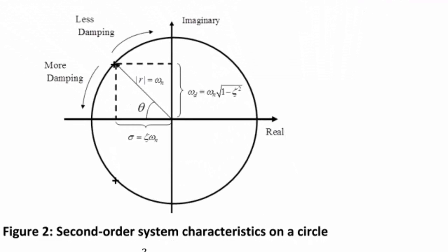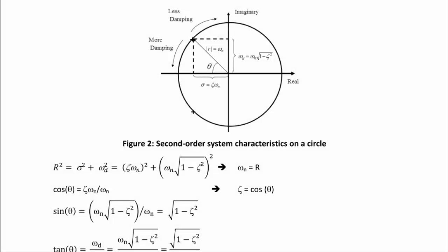The horizontal axis is σ = ζωₙ and the vertical axis is ωd = ωₙ√(1 − ζ²). This forms a right triangle whose hypotenuse is r, where r² = σ² + ωd² = ζ²ωₙ² + ωₙ²(1 − ζ²), simplifying to ωₙ. So the radius of the unit circle is ωₙ, and cos θ = ζωₙ/ωₙ, meaning ζ = cos θ.